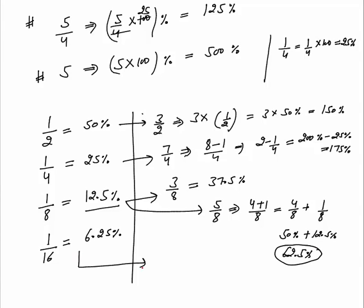For 1 by 16 related fractions: 3 by 16 would be 3 times 6.25 percent, which equals 18.75 percent. Since I'm multiplying the left side by 3, I multiply the right side by 3 as well. So 3 by 16 is 18.75 percent.